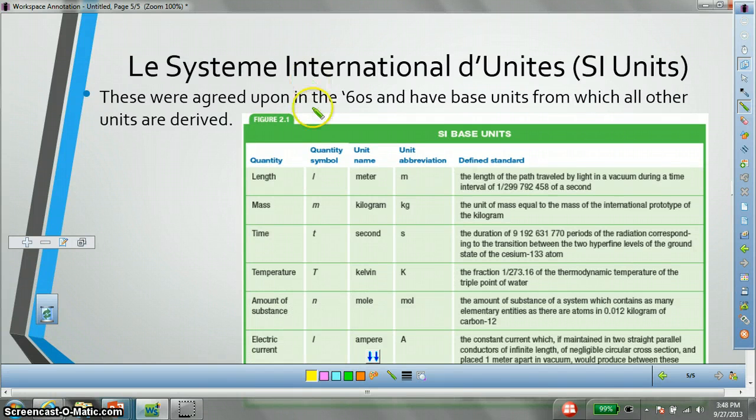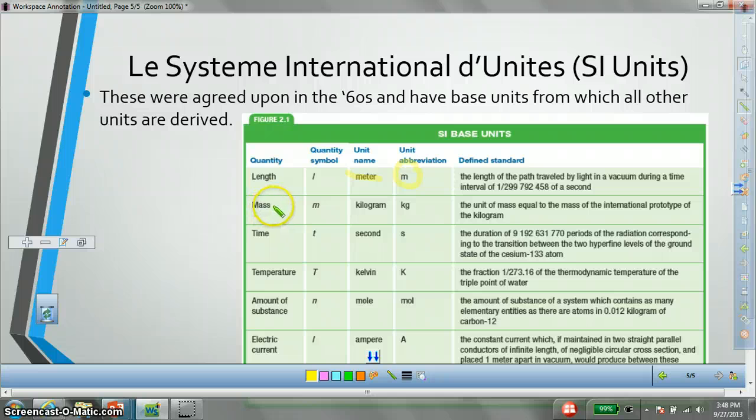Our standard unit of measurement for length is the meter, abbreviated with an M. That's different from what we're used to because in America, we usually use things like inches, feet, miles, but for science, we're going to use meters. Mass is measured in kilograms, abbreviated Kg. Time is measured in seconds, abbreviated S.